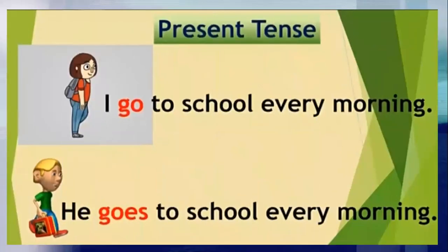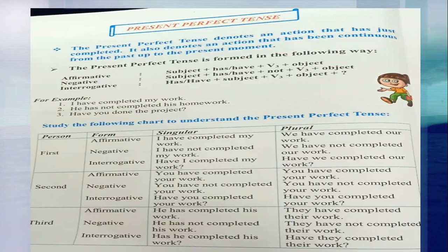Now let us study present perfect tense. For example: 'I go to school every morning' versus 'He goes to school every morning.' The chart shows the rules: present perfect tense uses 'have' or 'has'. It denotes an action that has just completed, or an action that has been continuous from the past up to the present moment.